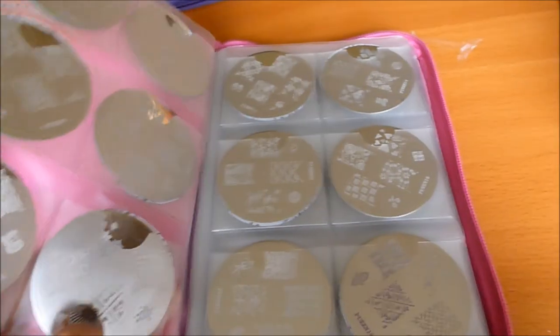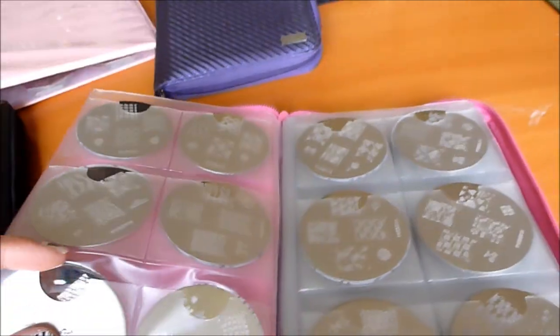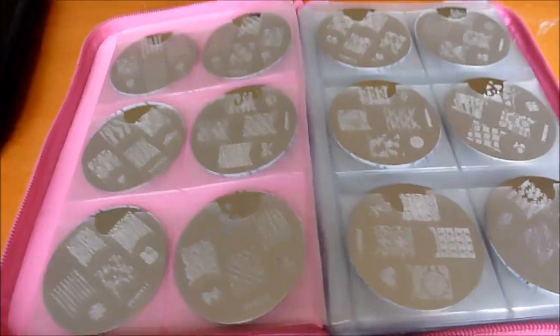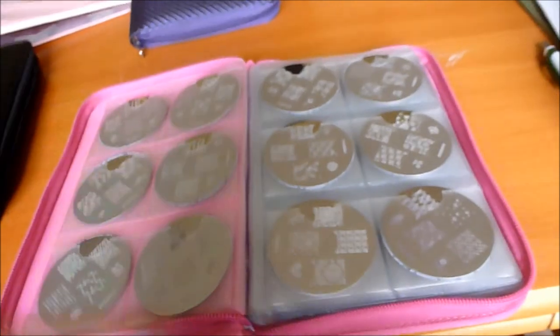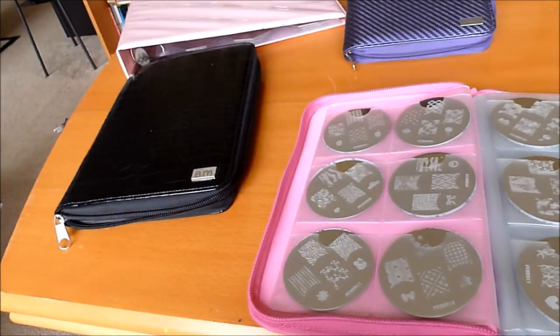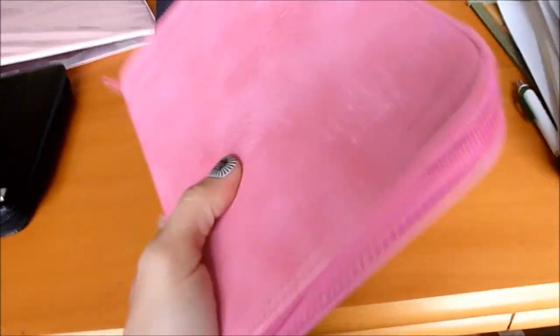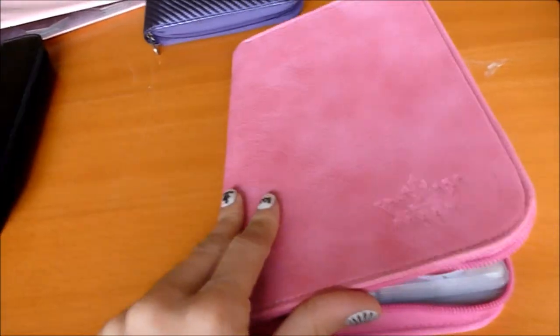What I like about Queen is that it's double sided. When I first got the Bundle Monster one I thought it was going to be that way but it's not. So, the Queen is double sided and has 14 pages. This can keep twice as many as the Bundle Monster one. It is also going to be heavier. So keep that in mind.